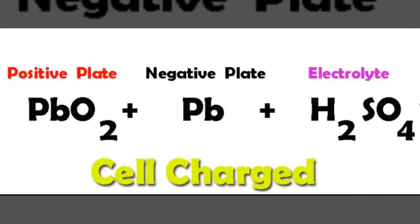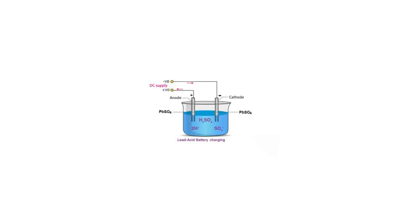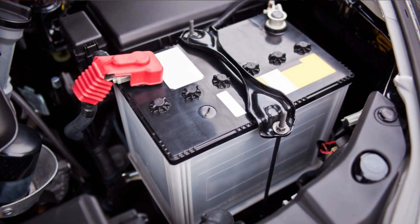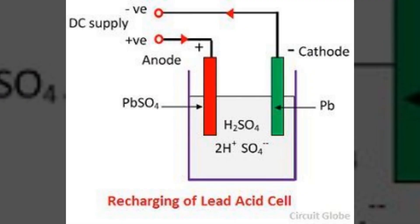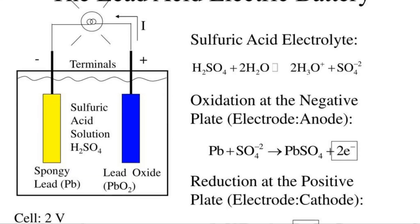But what happens when the battery recharges, you may ask? Well, the process simply reverses. When an external power source is applied, the lead sulfate on the plates breaks down, reforming lead dioxide, pure lead and sulfuric acid. The battery is then ready to discharge and provide power again.